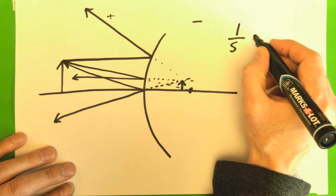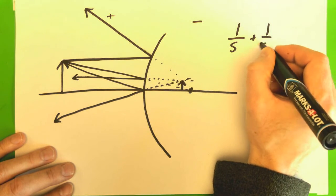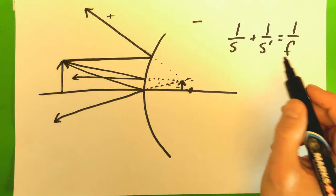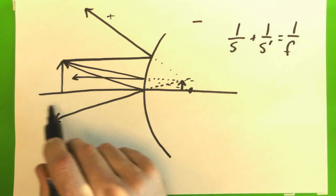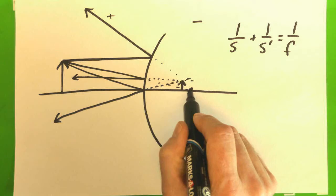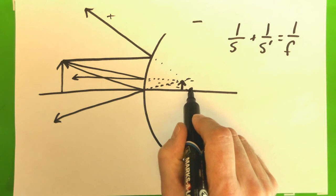One over s plus one over s prime equals one over f. And s is measured from the front of the mirror, s prime is measured from the front of the mirror, and f is this distance back to this point.